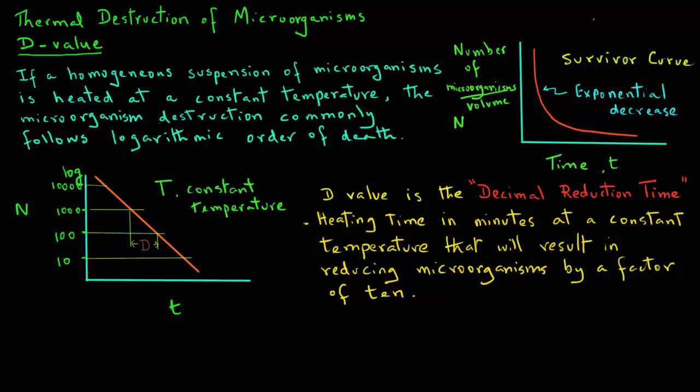We see here in this figure that this D value represents the time for the number of microorganisms to decrease from one thousand to one hundred, or it decreased by a factor of ten. We can also say that D value is the time for the survivor curve to traverse one log cycle.